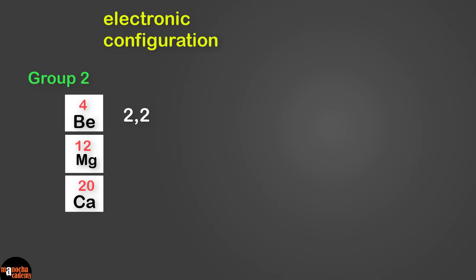Magnesium, which has an atomic number of 12, has an electron configuration of 2, 8, 2. And calcium, which has 20 electrons, is going to be 2, 8, 8, 2.